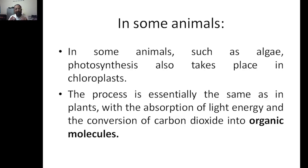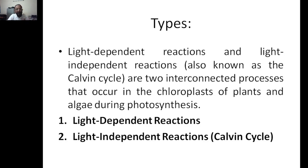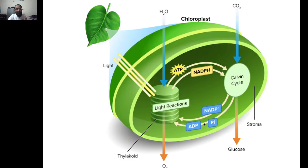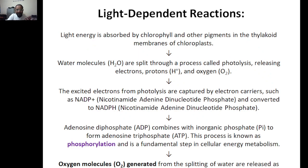In some organisms like algae, photosynthesis also takes place in a chloroplast, so the process is essentially the same as in plants — absorption of light converting carbon dioxide into organic molecules. Light-dependent: in the presence of light, water molecules are broken down into oxygen, and electrons are produced. Those electrons are given to the Calvin cycle, which converts carbon dioxide into glucose — which in essence can be sugars, fruits, and similar organic compounds.